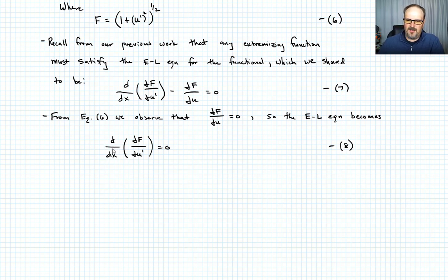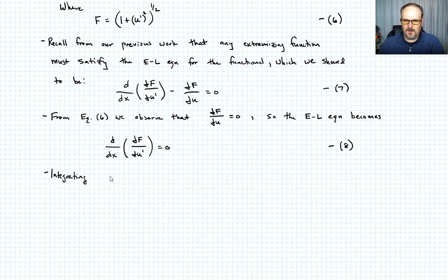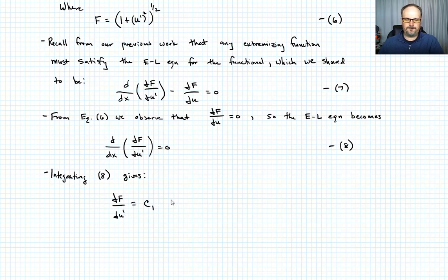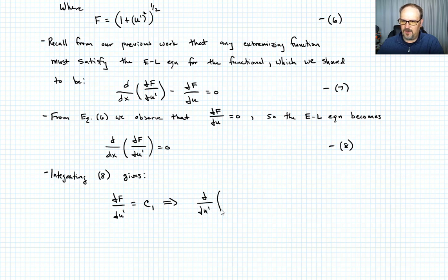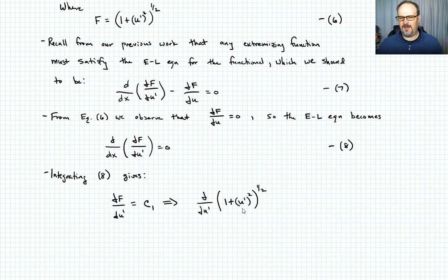If the derivative of something equals zero, then that something must be a constant. Integrating equation 8 gives: partial f / partial u prime equals c1. Substituting equation 6, the partial with respect to u prime of (1 plus u prime squared) to the one-half equals c1 — call that equation 9.